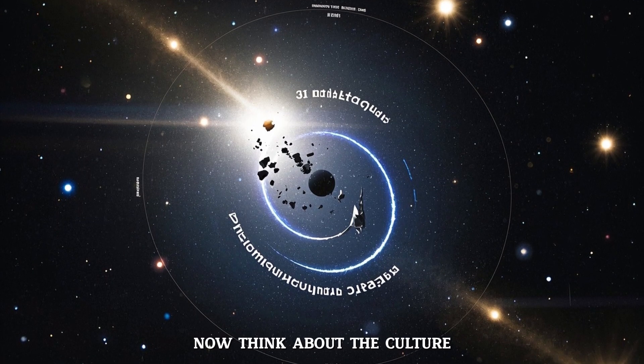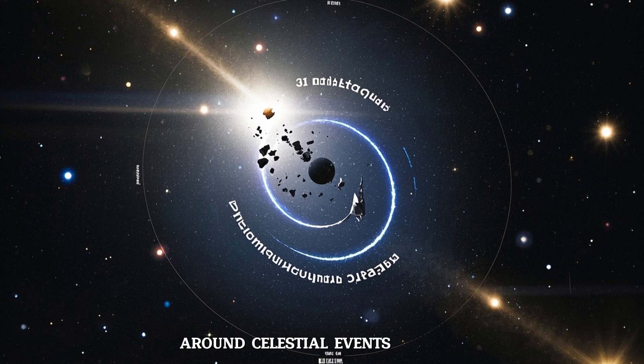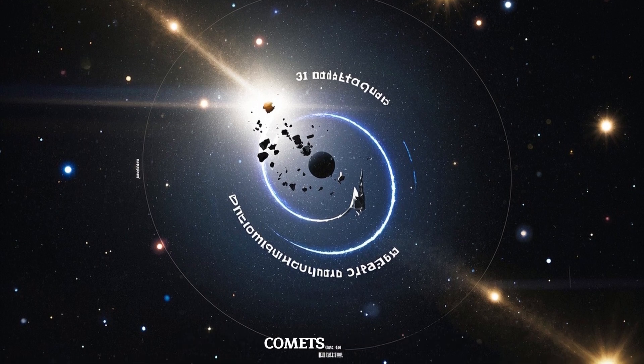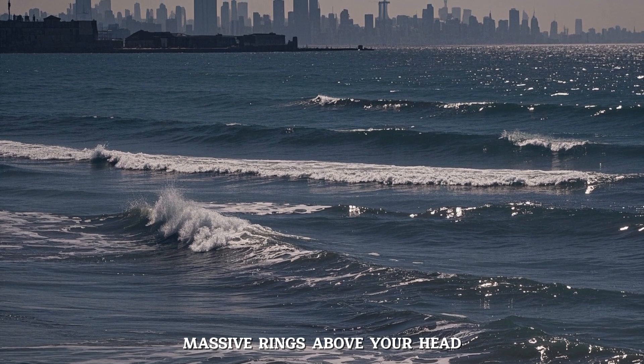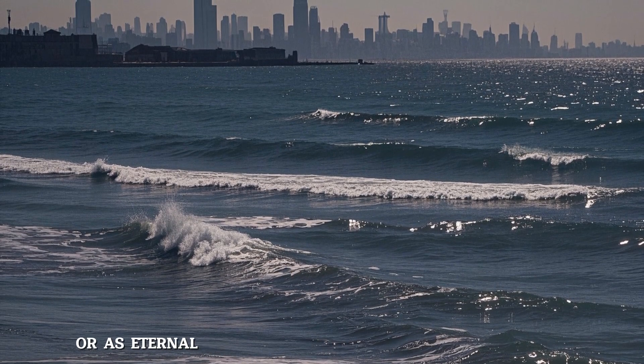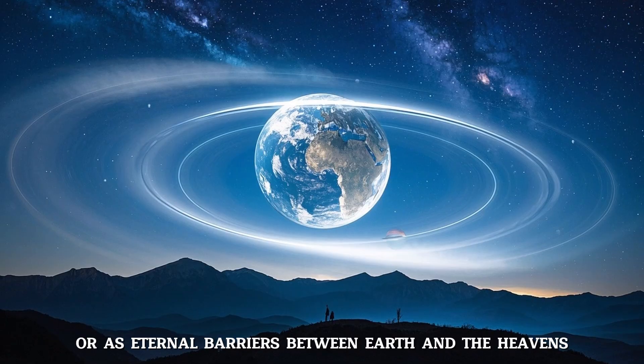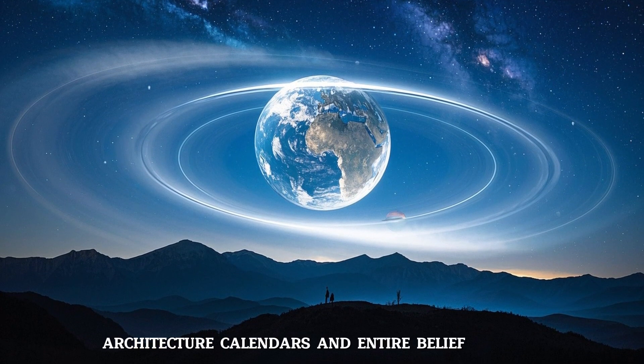Now think about the culture. Throughout history, humans have built myths and religions around celestial events, eclipses, comets, stars. Imagine the sheer impact of daily, undeniable, massive rings above your head. Ancient civilizations might have seen them as the arms of gods or as eternal barriers between Earth and the heavens. They would have shaped art, architecture, calendars, and entire belief systems.